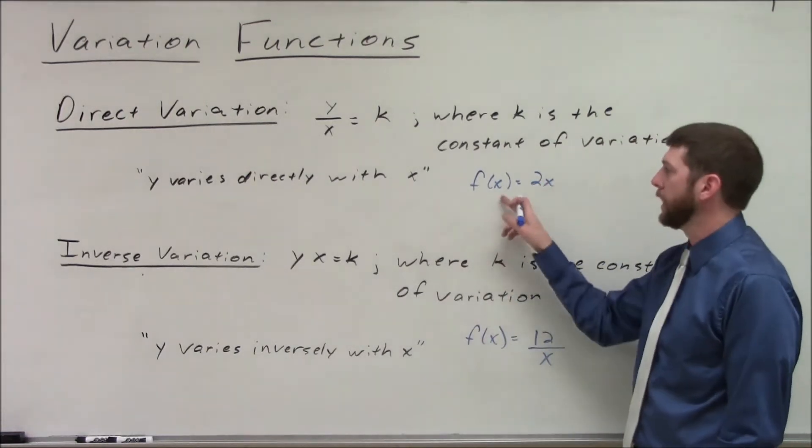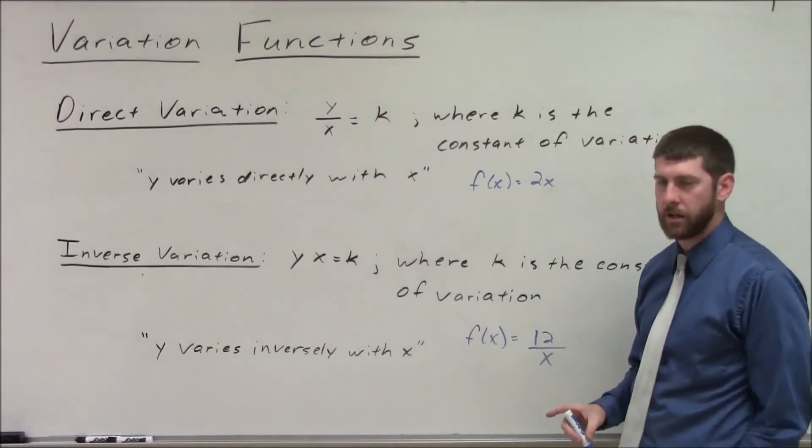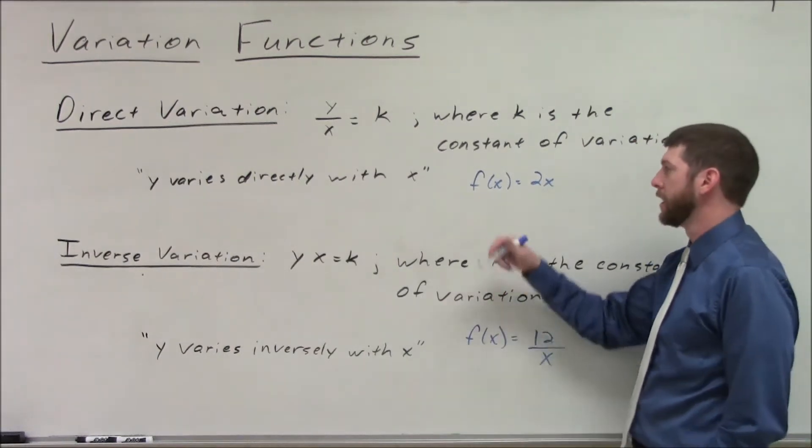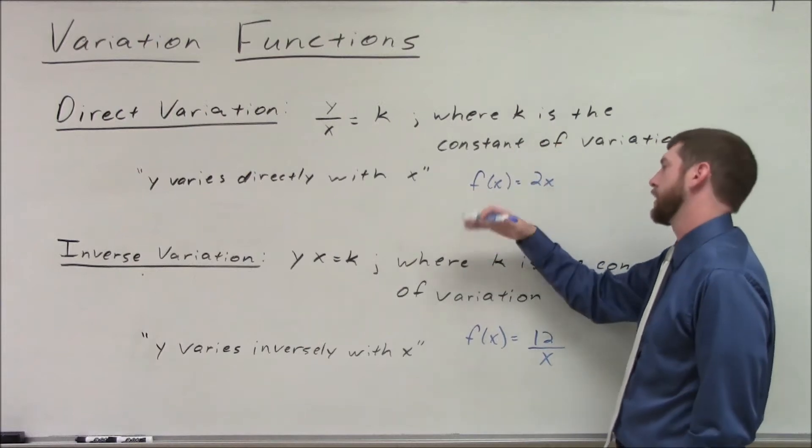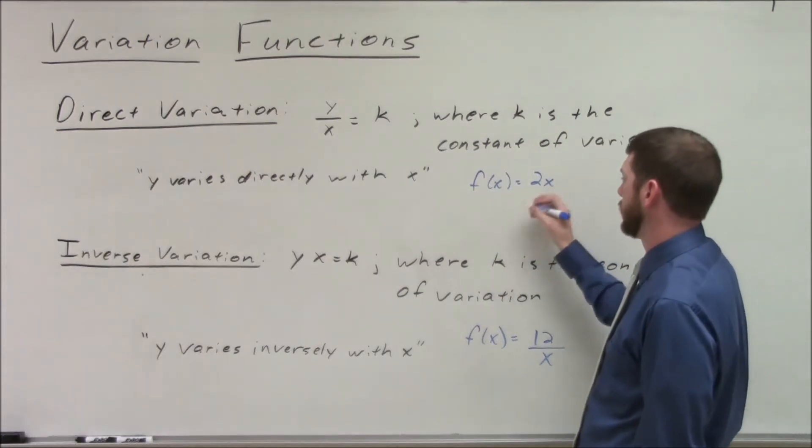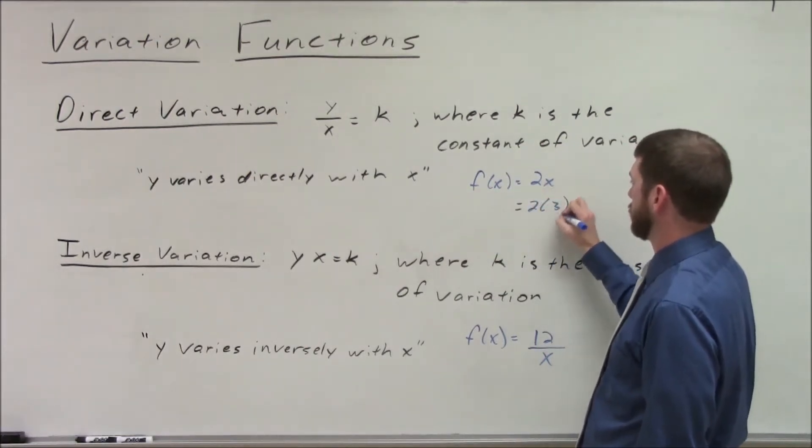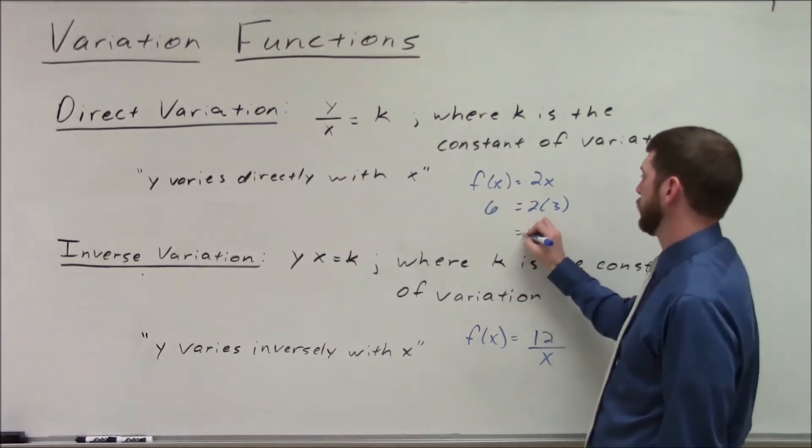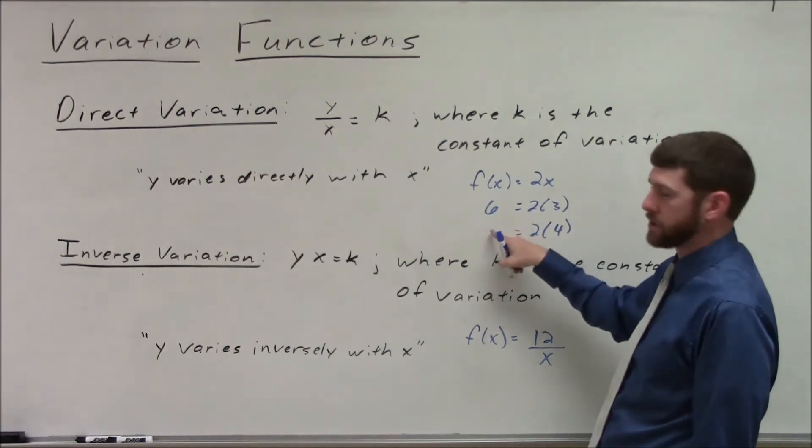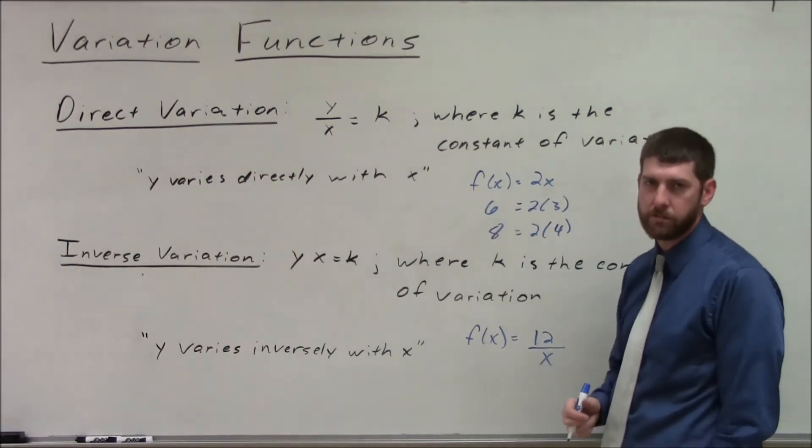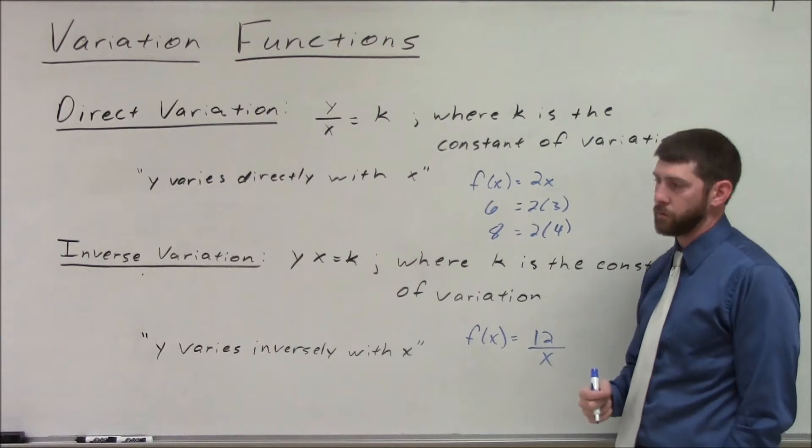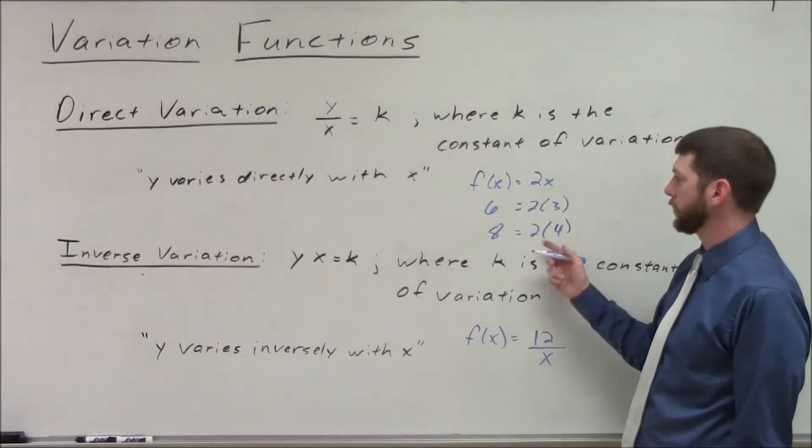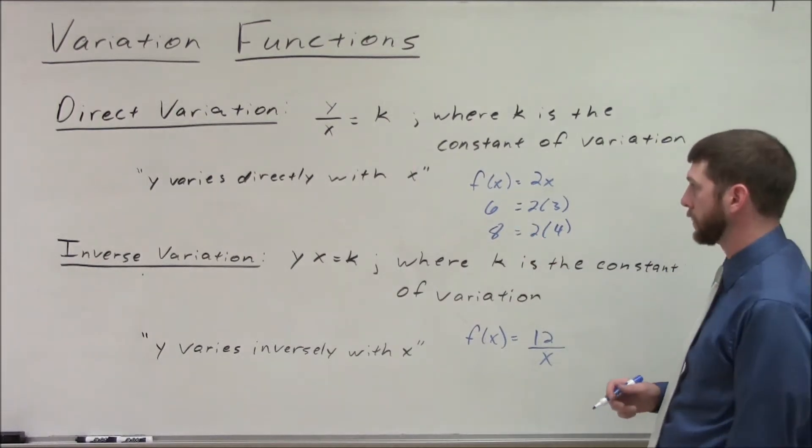So an example would be f of x equals 2 times x. And we can see that my y values here, if x was 3, 2 times 3 would equal 6. For us to keep this constant ratio of 2, if x were to go to 4, then the y value would also have to increase to be 8. So that's just what direct variation is. As your x values increase, your y values are also going to increase. So they're directly related right there.